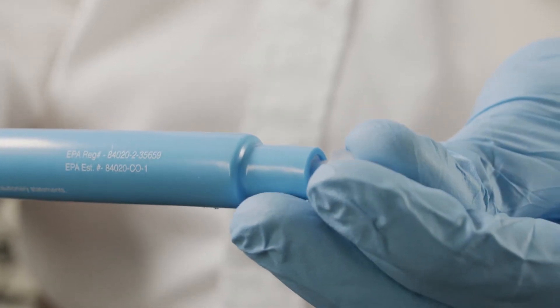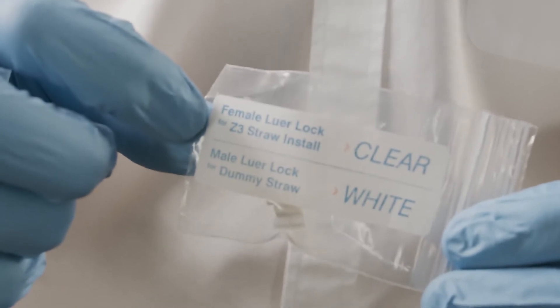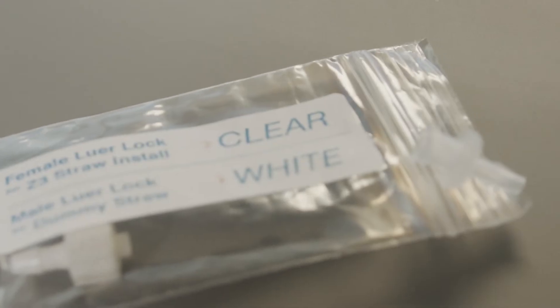Then twist the female lure lock into the male end of the straw. Check the lure lock bag label to help identify which one is the female lure lock.